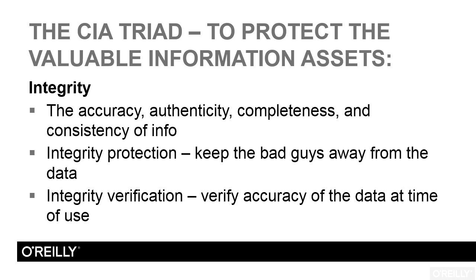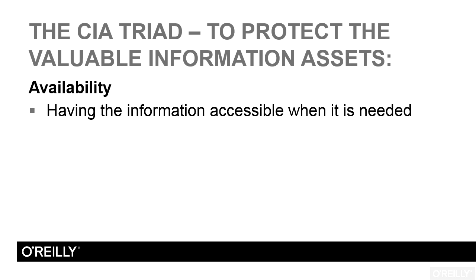The integrity of data is the second component of the security principles we use to protect valuable information assets. And then finally, the third component is availability. Availability deals with making the information accessible when it is needed. So if I'm about to make a critical business decision — whether it's 1,000 widgets or a million widgets — I need access to that information at that moment. That builds the CIA triad: Confidentiality, Integrity, and Availability.